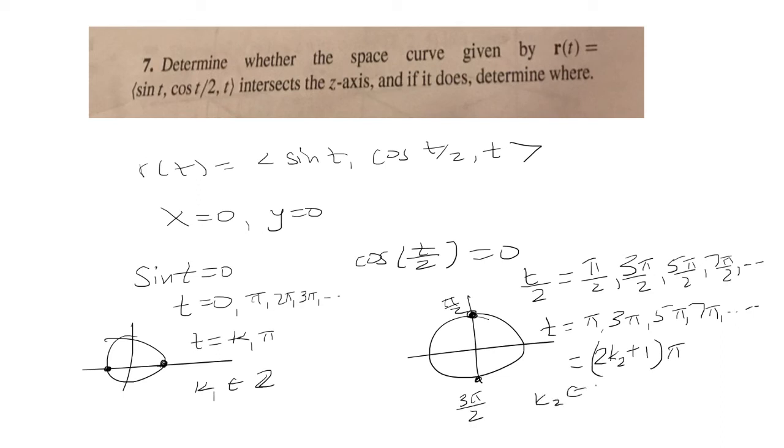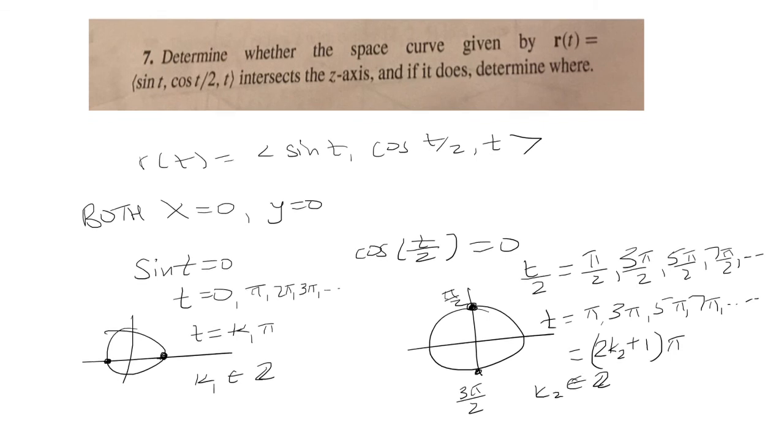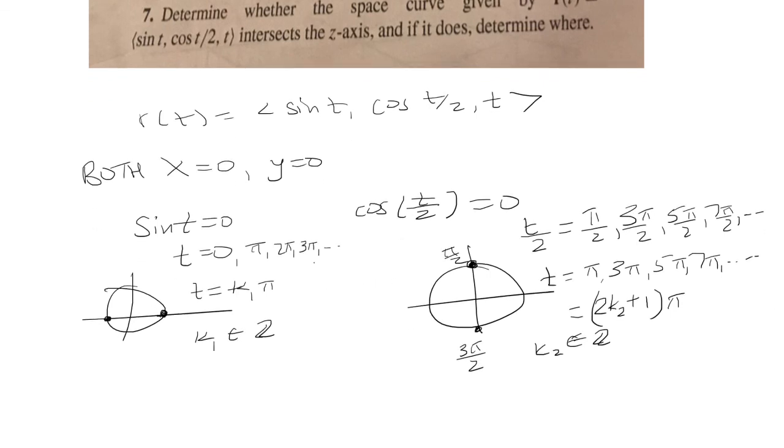So R(t) is going to intersect the z-axis when both x equals 0 and y equals 0. So we have to see when both of these are 0. In other words, we have to see what they have in common.